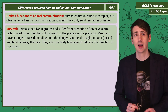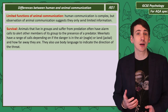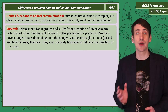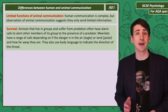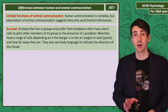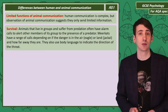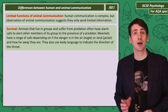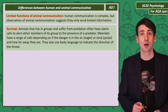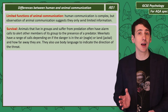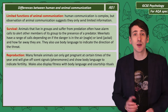Starting with survival: animals that live in groups and are preyed upon tend to have an alarm call that can warn other members of the group that they've spotted a predator. Meerkats actually have a range of calls depending on the type of predator — for example, whether it's an eagle in the air or a jackal on the ground. The alarm call also varies depending on how far the predator is from the group. Meerkats will also use body language to indicate the direction of the threat.